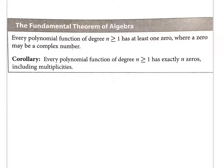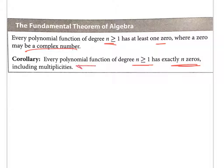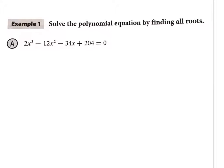The Fundamental Theorem of Algebra states: every polynomial of degree at least one has at least one zero, and it may be a complex number. The corollary says it has exactly n zeros counting multiplicities — meaning if one zero repeats, that's okay, but you always get exactly as many zeros as the degree.